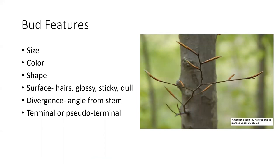When considering the features of buds, we can look at the size, color, and shape, and what the surface is like. Horse chestnut sometimes has sticky buds. Sometimes on our hickories, they have very hairy or pubescent buds. This American beech tree has buds that are relatively small but long — they look like little cigars. We also look at how they are arranged, how they're angled from the stem, and whether the bud is at the end of the stem — the terminal bud — or just below the end, which would be pseudo-terminal.